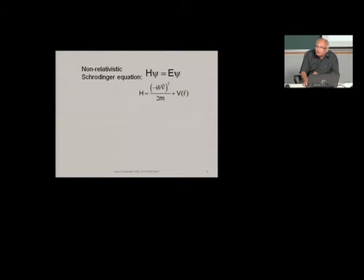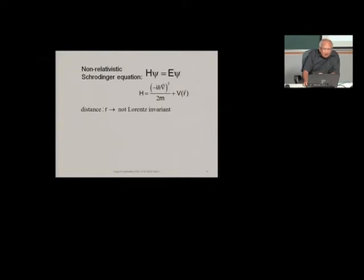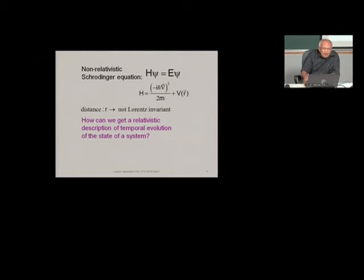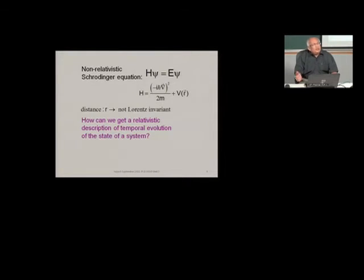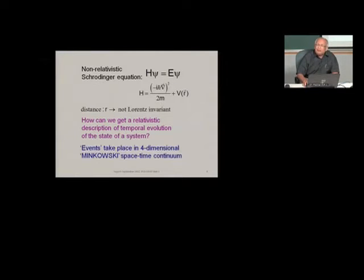The Schrödinger equation has a distance term — V is a function of r — and distance undergoes Lorentz contraction, so the Schrödinger equation is not Lorentz invariant. That is the reason you need a relativistic formulation of quantum mechanics. You need state vectors to describe the state of the system, but you also need the evolution of the state to be described by an equation which is Lorentz invariant — which, for electrons, is the Dirac equation. Events take place in a four-dimensional Minkowski spacetime continuum.